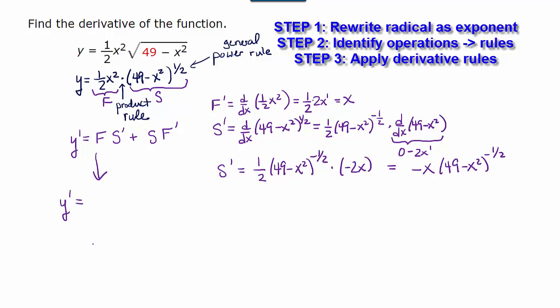So y prime is equal to the first function which was 1 half x squared times the derivative of the second which we found to be negative x times 49 minus x squared to the negative 1 half. Now we need the plus the second function which was 49 minus x squared to the 1 half times the derivative of the first which was x.